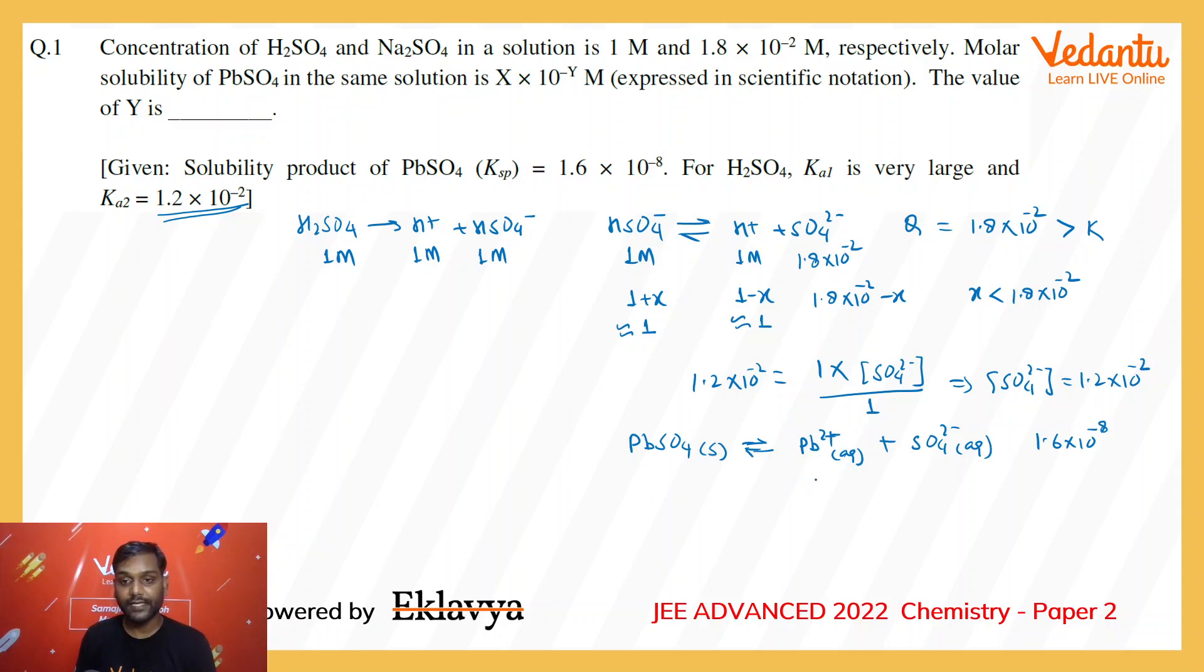If suppose solubility is S, then S is the concentration of Pb2+ ion and S will be the concentration of sulfate. Already 1.2 × 10^-2 sulfate is present from Na2SO4, and this sodium sulfate can be approximated as 1.2 × 10^-2 as S would be very very small.